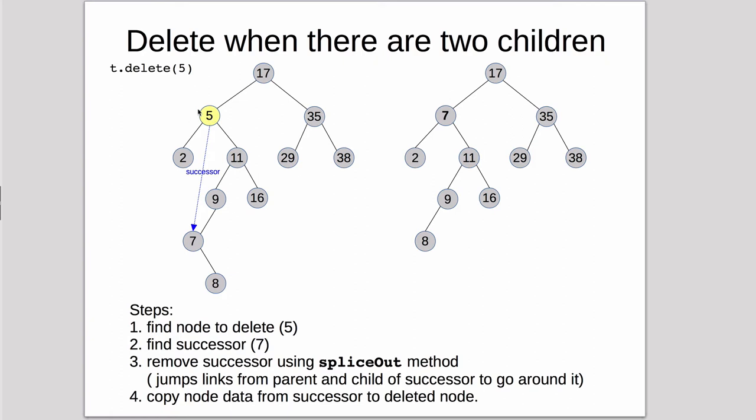So basically we're replacing the data inside this object, and the 7 object will have, when we're done, will have no reference to it, so Python will automatically delete it, so we'll end up with this tree here.